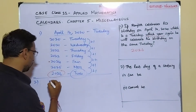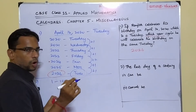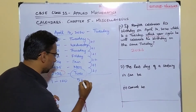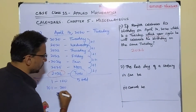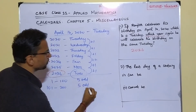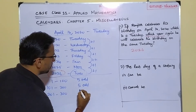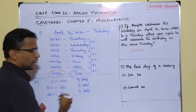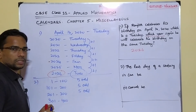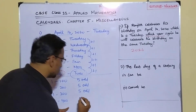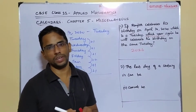For the first 100 years — year 1 to year 100 — we have 5 odd days. For year 101 to year 200, we again have 5 odd days. For year 201 to year 300, again 5 odd days. And for year 301 to year 400, we have 6 odd days.